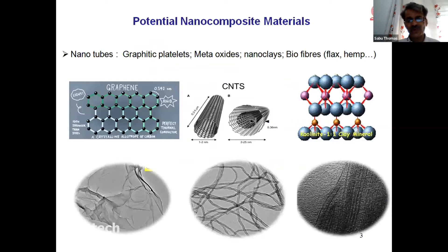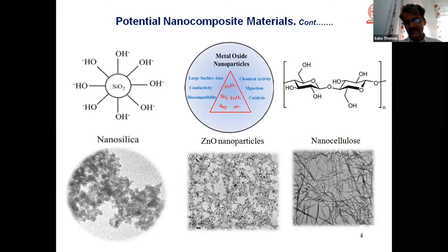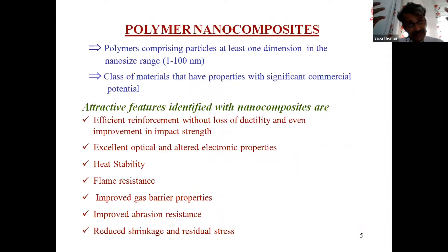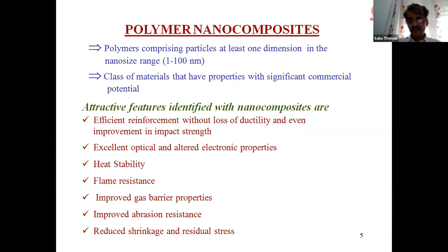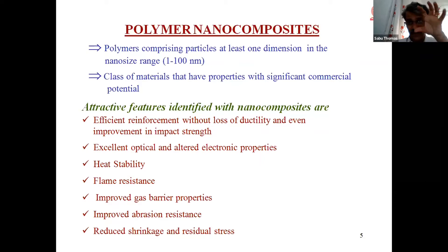My group is extremely active in various nanomaterials: graphene, CNTs, metal oxides, nano silica, zinc oxide, nanocellulose, and nano chitin. We synthesize a large number of nanoparticles in my laboratory and then put them into plastics to make polymer nanocomposites. We do this to get good mechanical strength without sacrificing clarity, and to achieve excellent optical properties, electrical properties, heat stability, flame resistance, resistance to gas transport, resistance to abrasion, and reduced shrinkage.